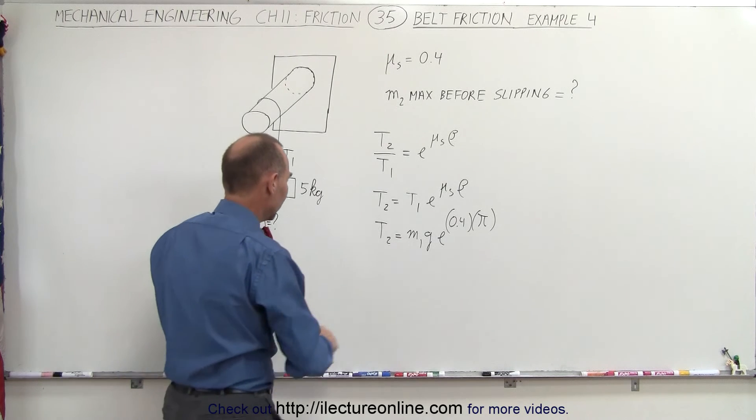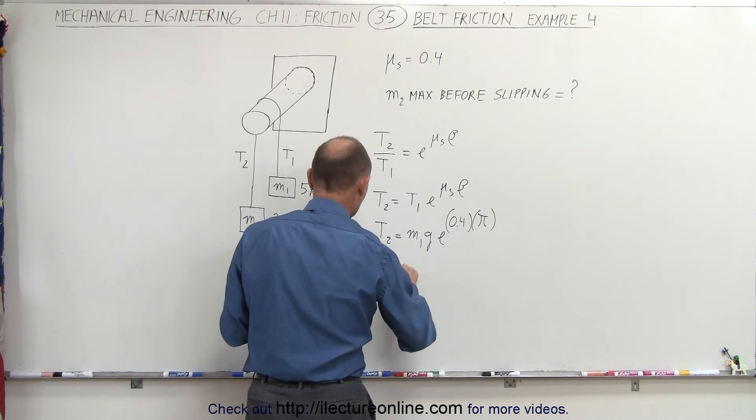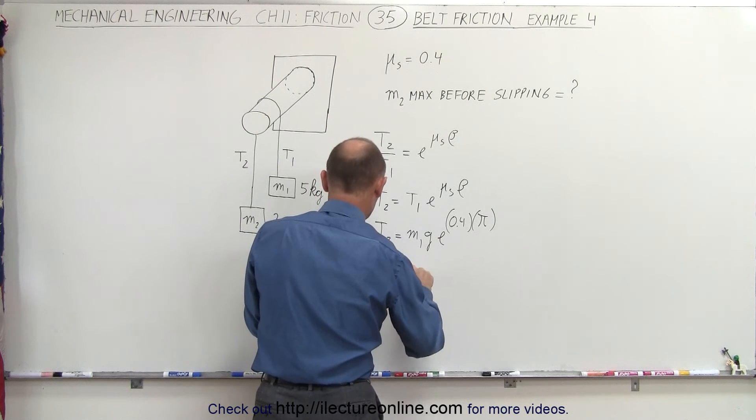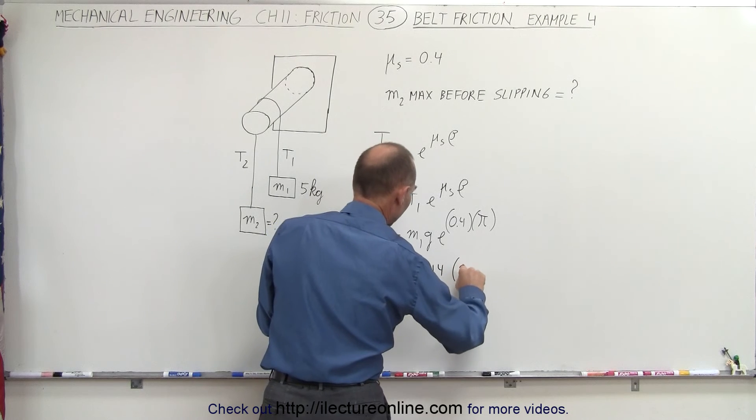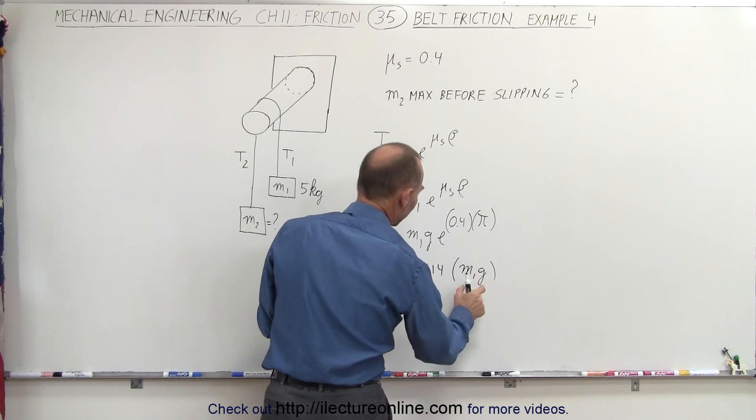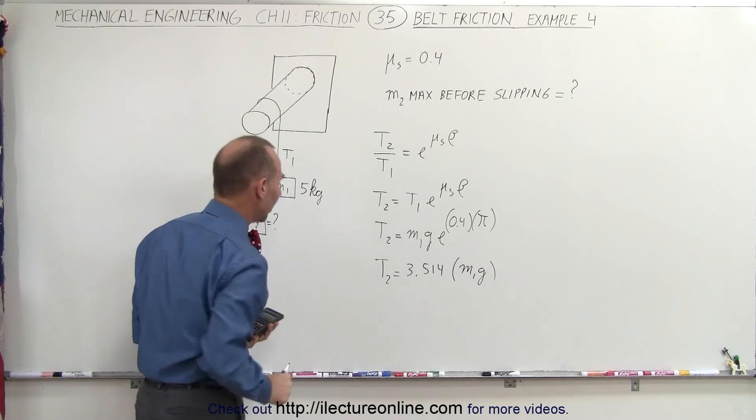And so what that tells us is that T2 is equal to 3.514 times M1G, times the weight of the other side.